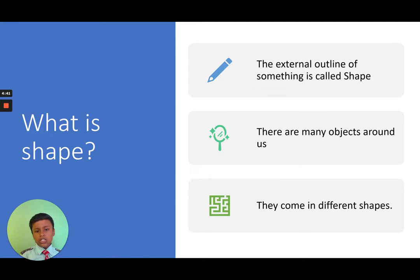What is shape? The external outline of something is called shape. There are many objects around us. They come in different shapes.